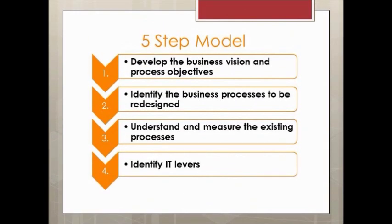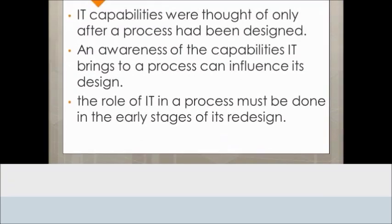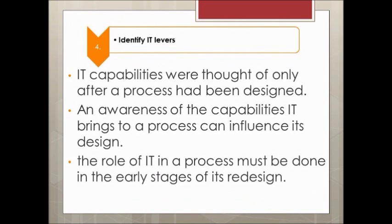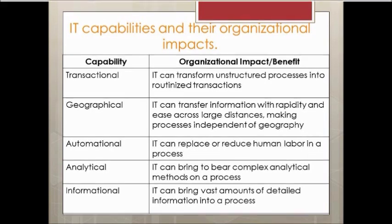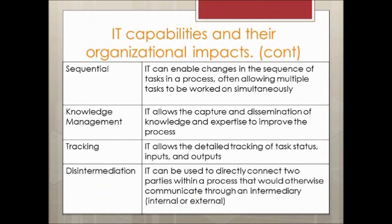Step 4: Identify the IT levers. IT capabilities were thought of only after a process had been designed, even when using the highest industrial engineering approach. The conventional wisdom in IT usage has always been to first determine the business requirements of a function, process, or other business entity, and then develop a system. The role of IT in a process must be addressed in the early stages of its redesign. Organizations may want to develop their own list of IT capabilities specific to the types of processes they employ. IT is a powerful tool that can actually create the process design options rather than simply supporting them.